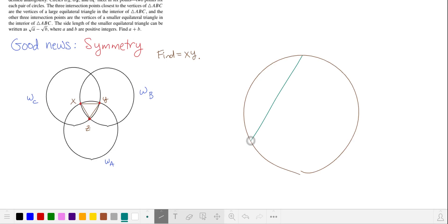ABC is inscribed in this circle, and omega a is going to be tangent to our circle and sides ab and ac. So it's going to look something like this. Let me try that again.